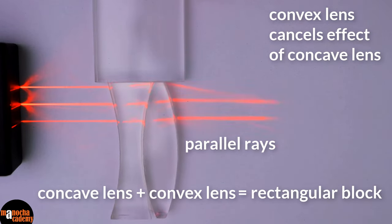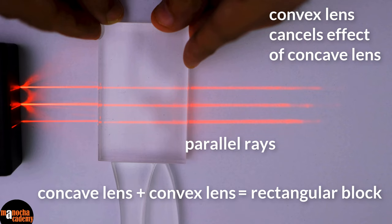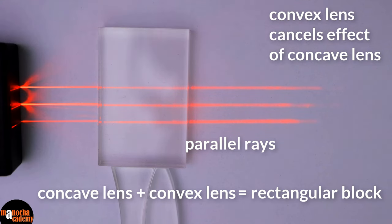The combination is behaving like a rectangular glass block. Isn't that amazing? In our experiments, the parallel beam of light was parallel to the principal axis of the lens. Now what will happen if the parallel beam is incident obliquely, at an angle to the principal axis? Let's go ahead and find out.